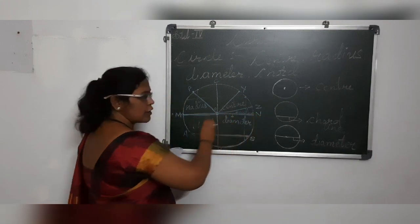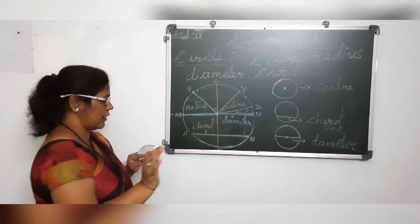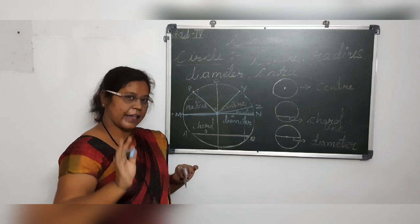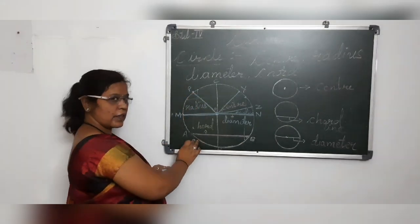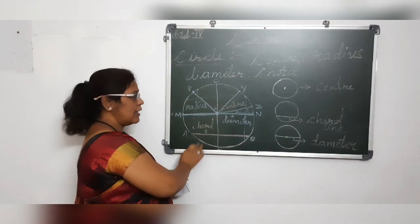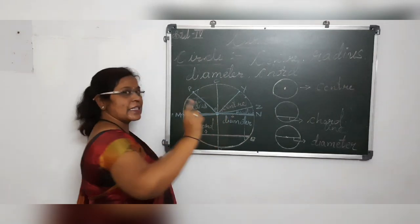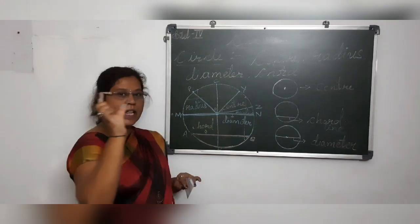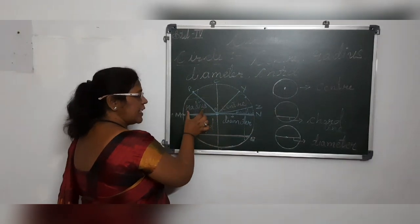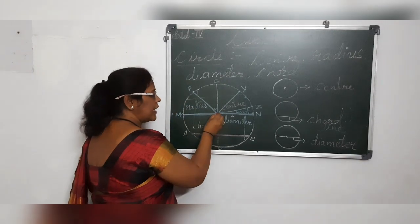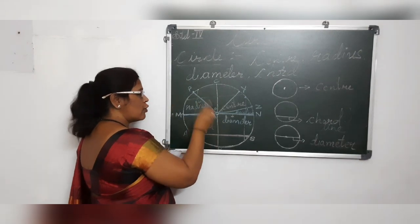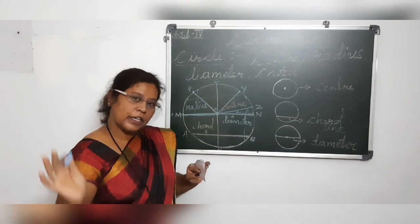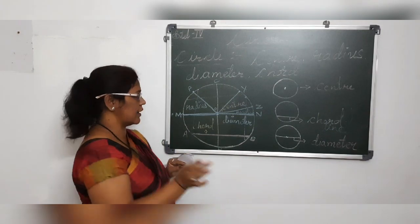Diameter is the longest chord on the circle, and chord is the line on the circle which you can draw anywhere, joining two points on the circle, but it should not pass through the center point of the circle. Radius is half of the diameter and it joins the center point of the circle to any other point on the circle.